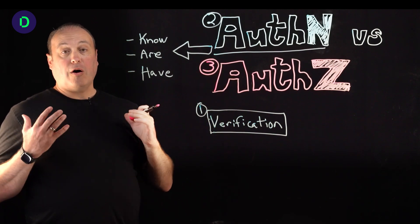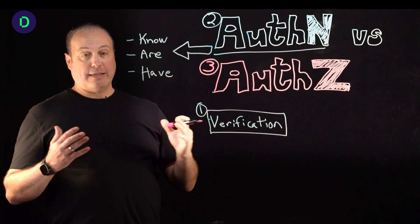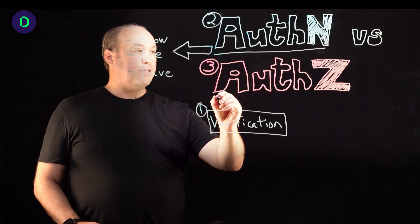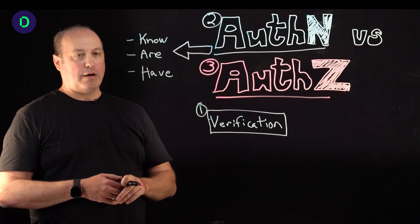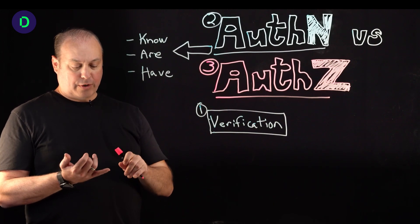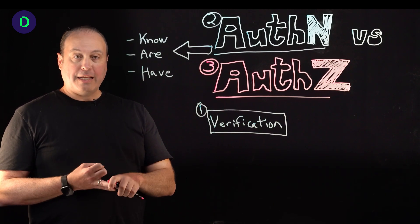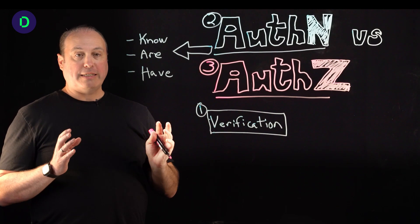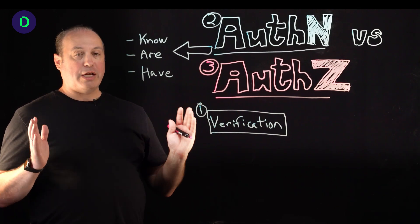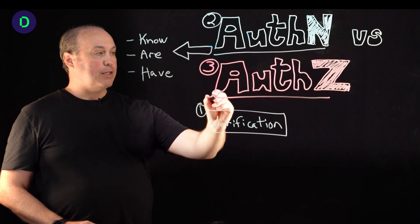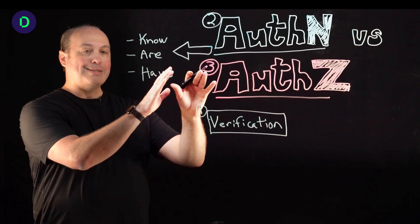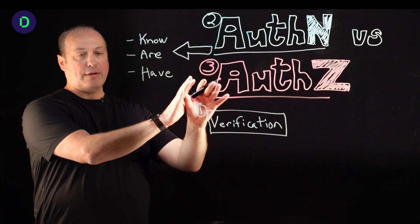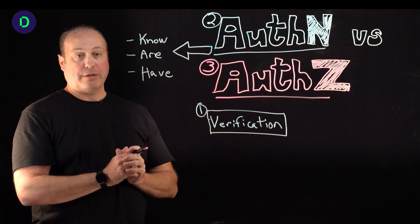Because we are not all given the same rights to access everything. And this piece here, the authorization or AuthZ part, is a very important part of the security equation. Whether you're in security, identity, whatever part of IT or the organization you're in, understanding this authorization part is very critical. Because you can go as deep and as wide with AuthZ as you possibly can imagine.